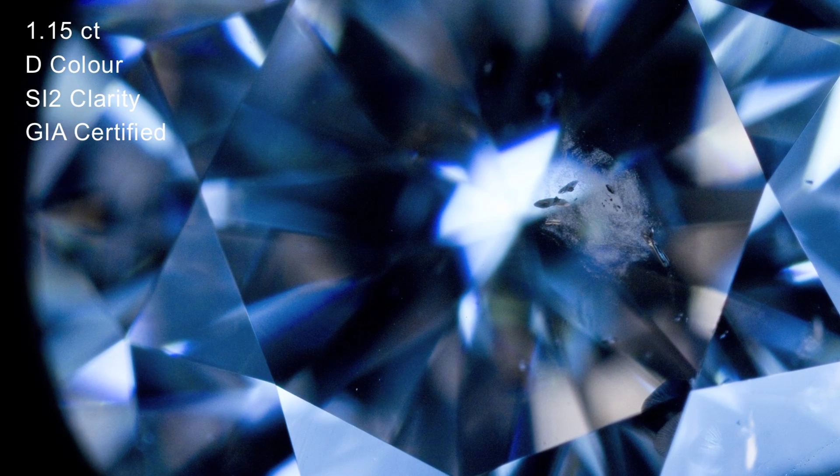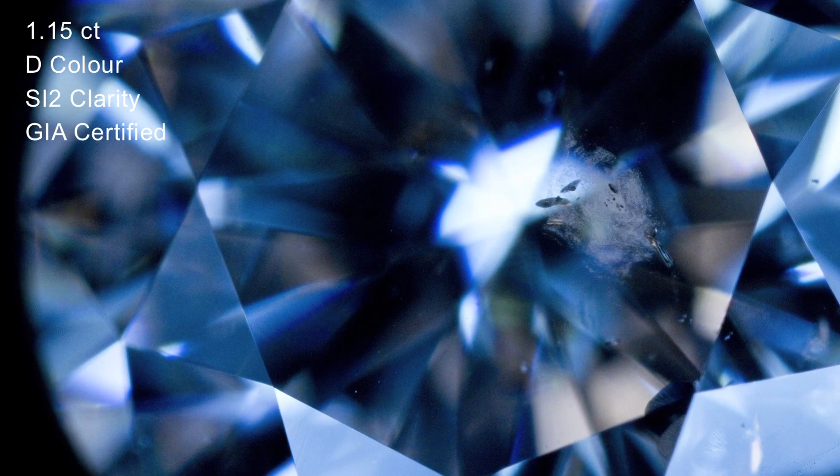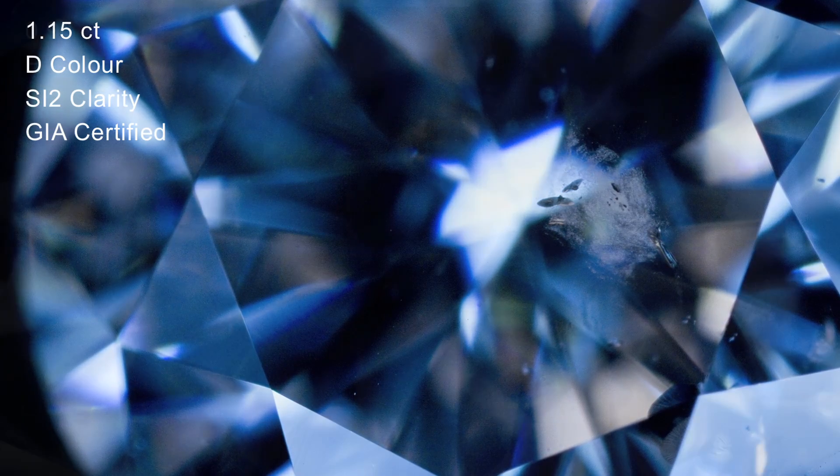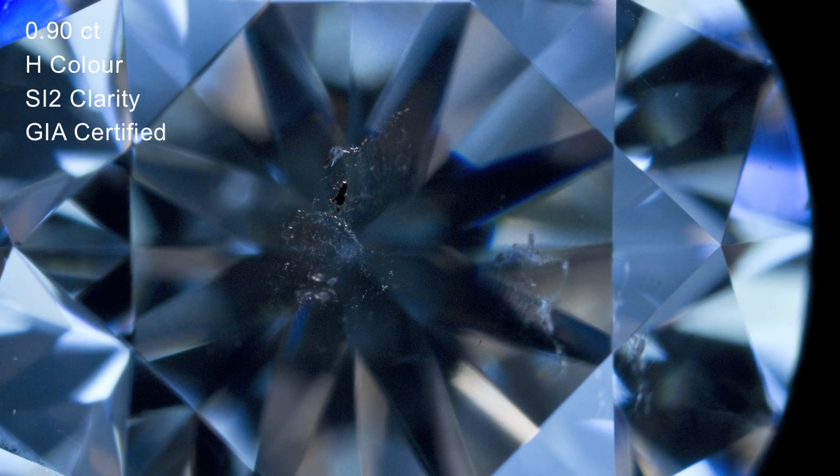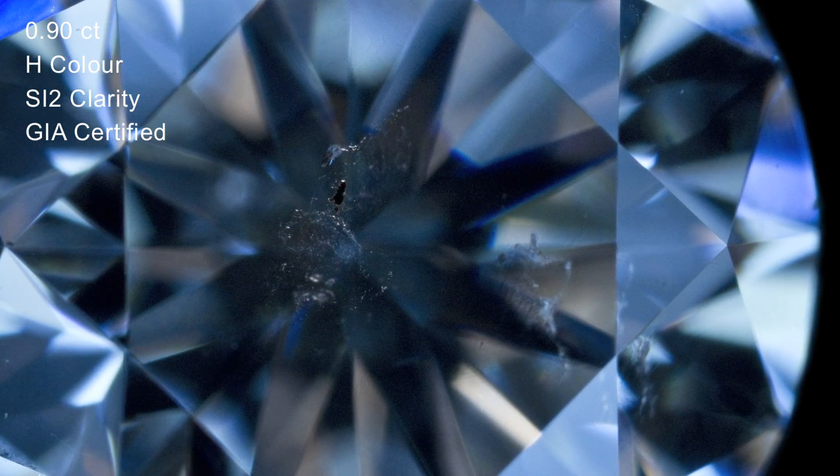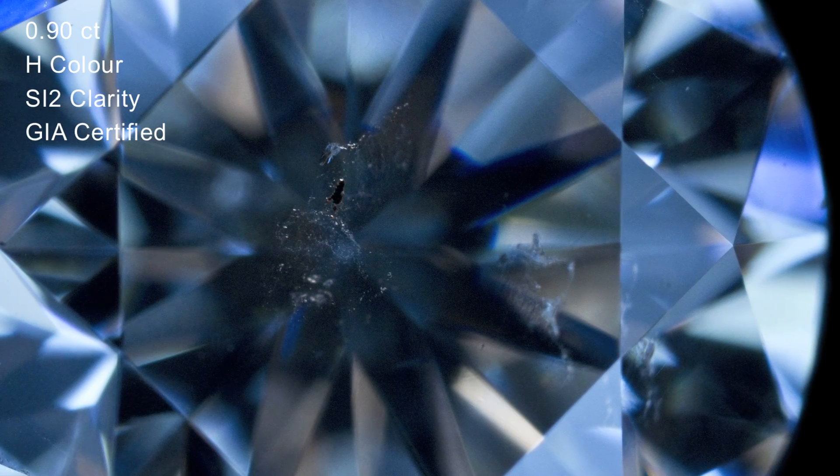The next inclusion is called a cloud. This is a very broad term, as it means there's a collection of small inclusions close together. They can look very different. If the diamond has a larger cloud, it may start to appear cloudy or hazy, and this can have a significant effect on the appearance of the stone to the naked eye.